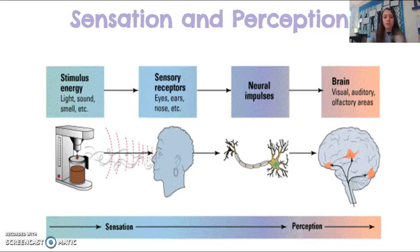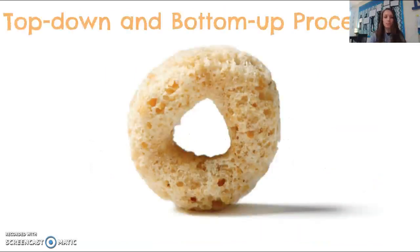Let's go on with some more definitions that we can apply to all forms of sensation and perception. We're going to start with top-down processing and bottom-up processing.